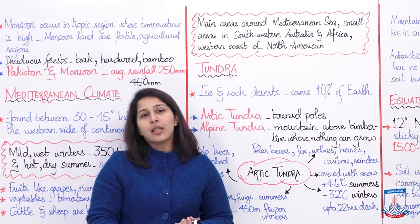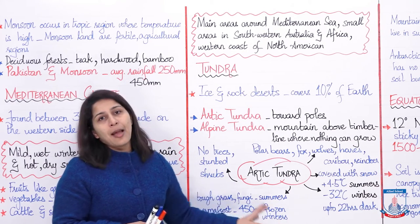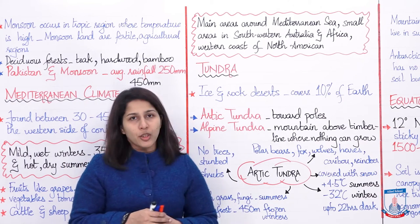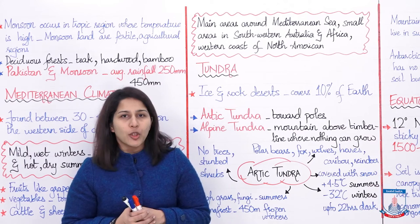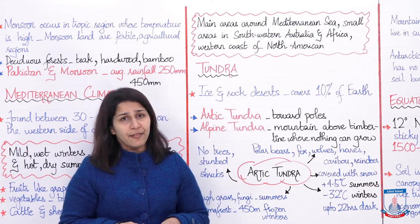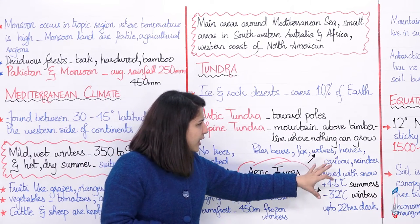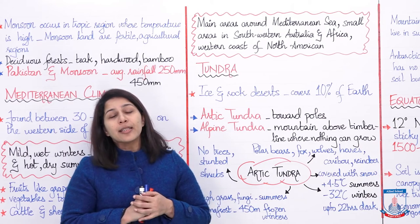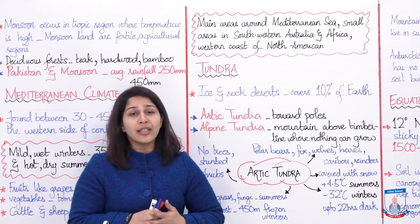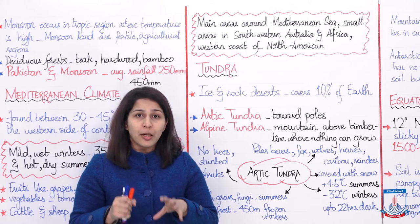Down deep, the soil layer is all frozen — this is permafrost. In winters, tough grass and fungi that grow in summers die off. Animals living in arctic tundra include polar bears, fox, wolves, hares, caribou, and reindeer. This is the power of Allah — ke aisi extreme jagah mein Allah ne aisi creatures banaye hain jo us temperature mein zinda reh sakti hain.